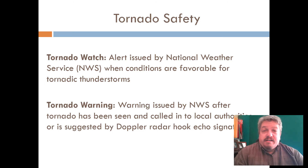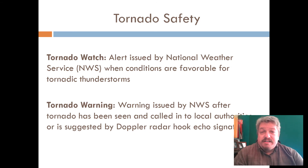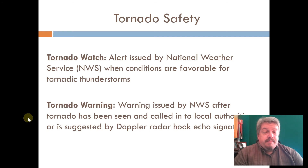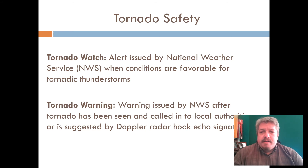Just like lightning safety, we also have tornado safety. If you live in the Midwest, you should know this. You'll often hear about a tornado watch or tornado warning, or thunderstorm watch or warning, issued by the National Weather Service. There's an important difference: a watch means the conditions are right — be aware, it's favorable. A warning means it's actually happening. So when a tornado warning is issued for Cook County, that means there is a tornado in Cook County or one is observed happening.